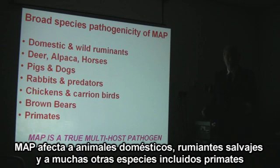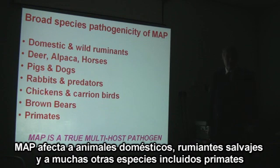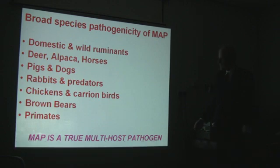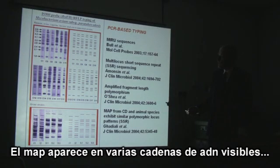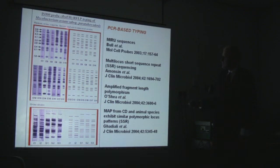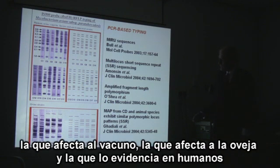MAP's principal reservoir of infection is in domestic and, to a lesser extent, wild ruminants. But many other species, including primates, can get infection and disease due to MAP. So MAP is a true multi-host pathogen. MAP is not a single organism — it is diversified into strains that affect cattle and strains that affect sheep. And we have evidence that there are strains which affect humans.